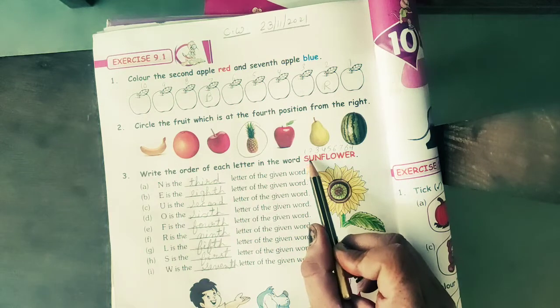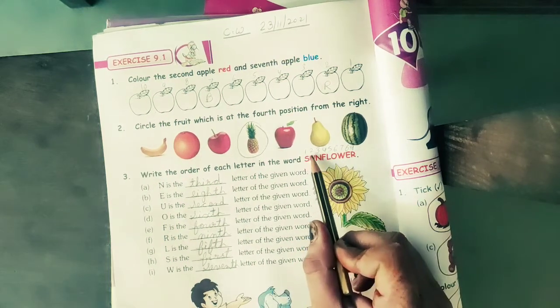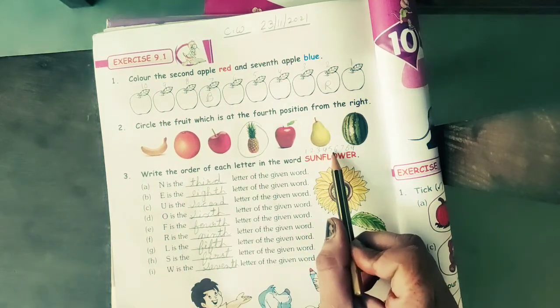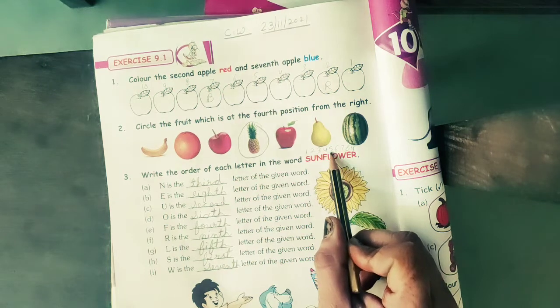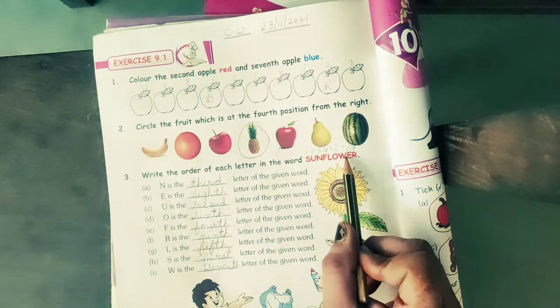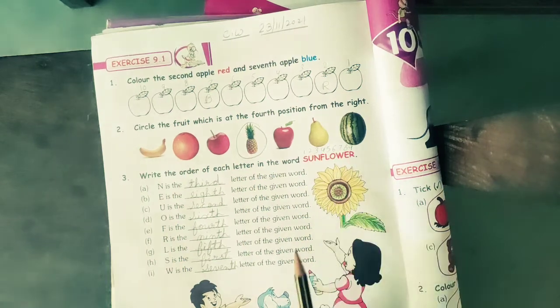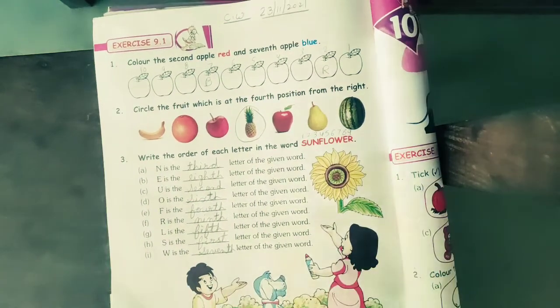This is the spelling of sunflower. So you have to write like this the number one, two, three, four, five, six, seven, eighth, ninth. These are 9 letters of sunflower spelling.